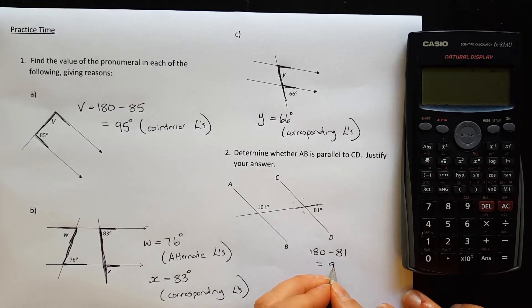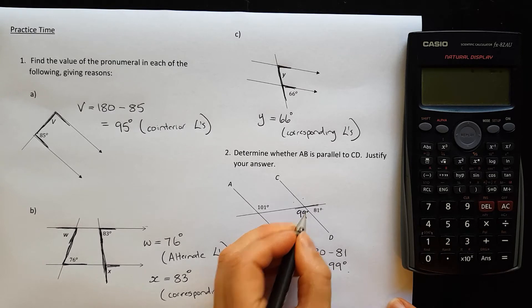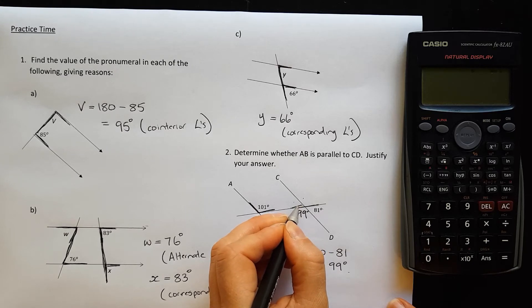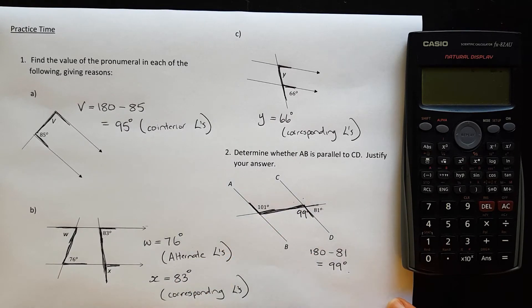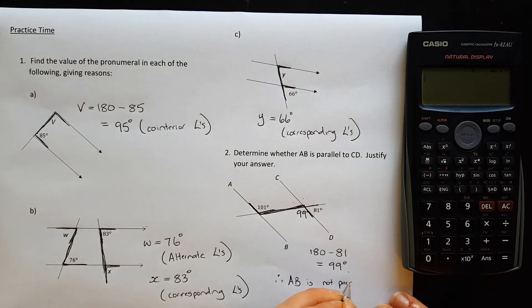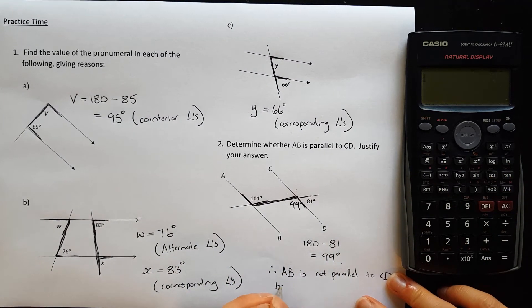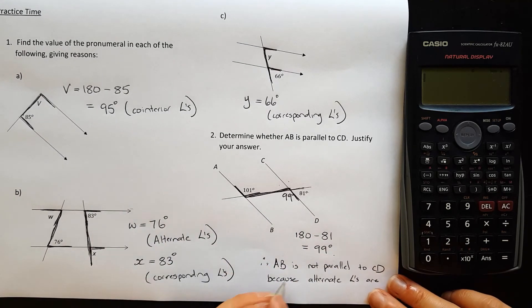So that means that angle there is 99 degrees. Now those angles, the 101 and the 99, form a Z shape. Which means if they're parallel, those angles would need to be equal. But they're not equal. So that means therefore AB is not parallel to CD because the alternate angles are not equal.